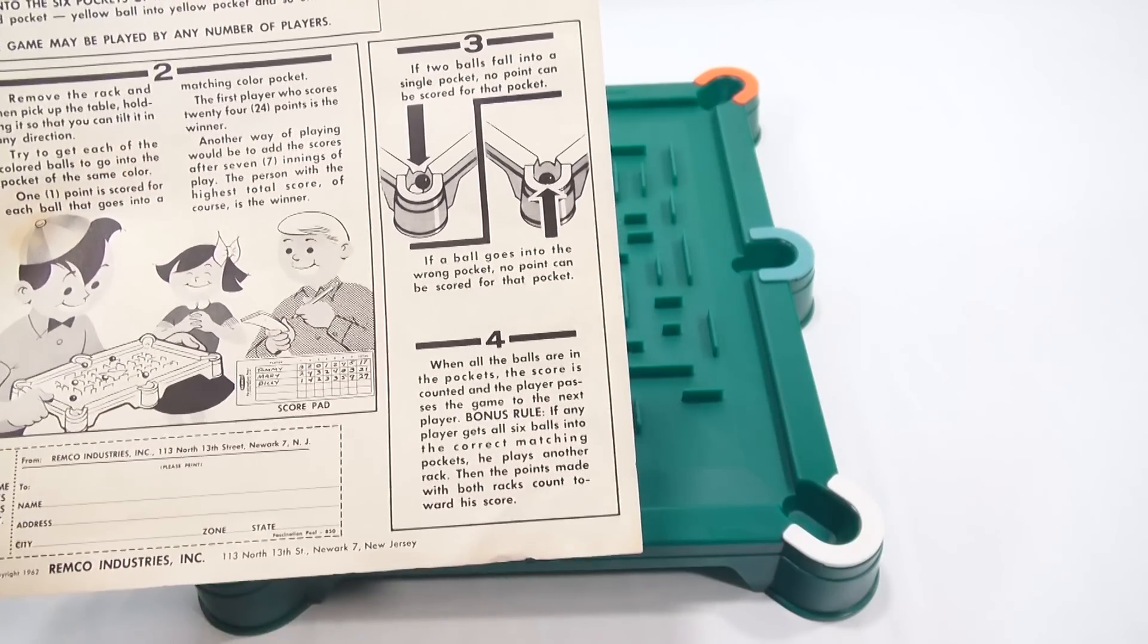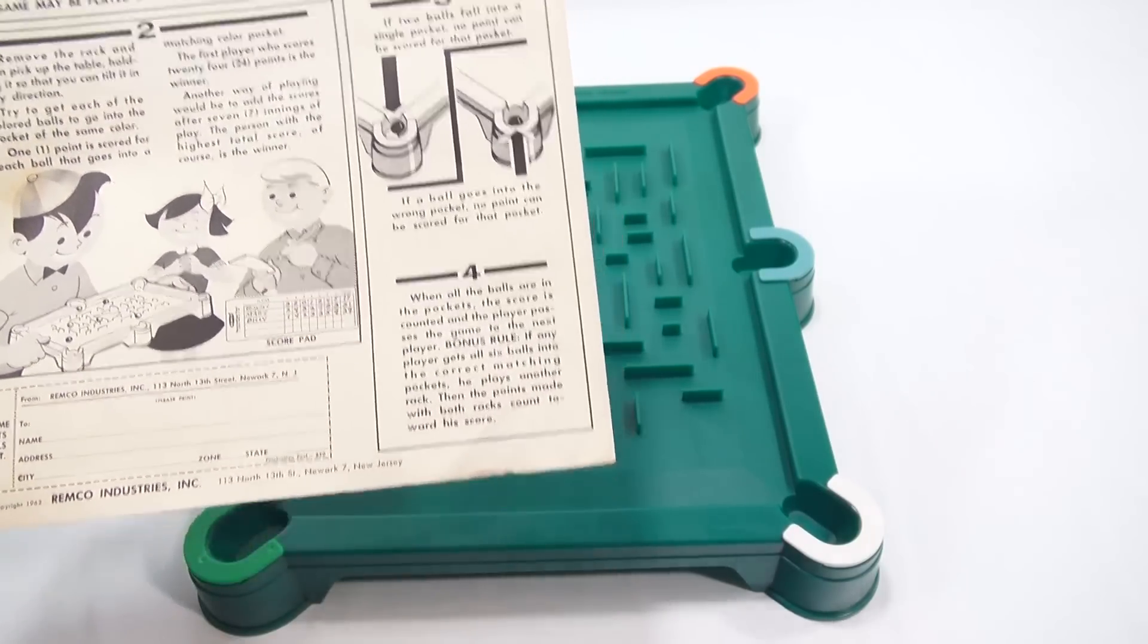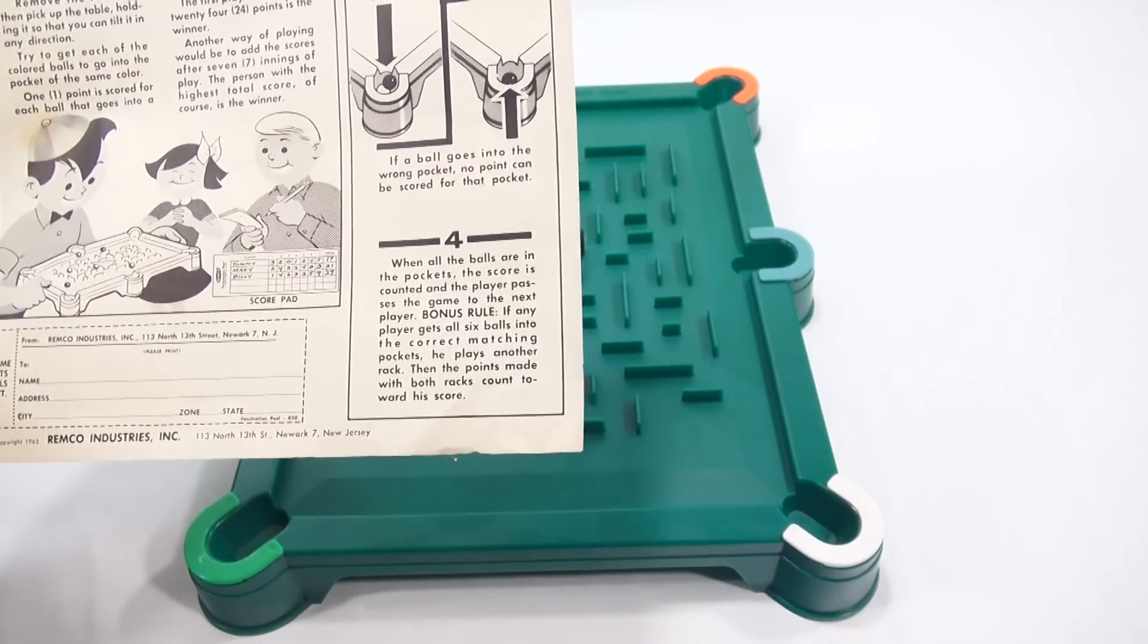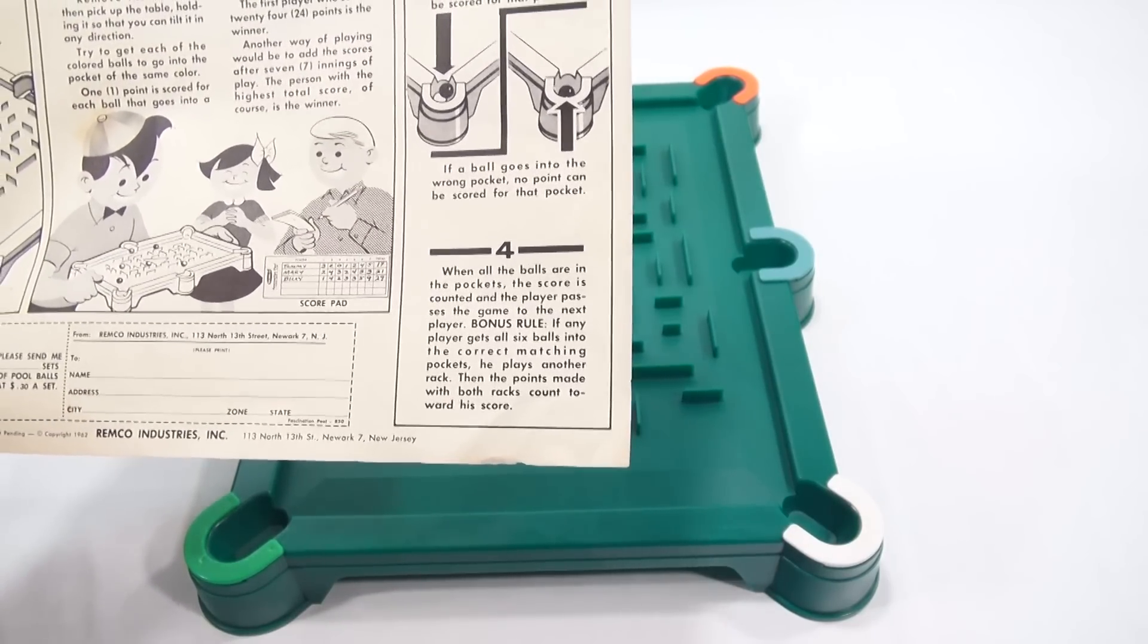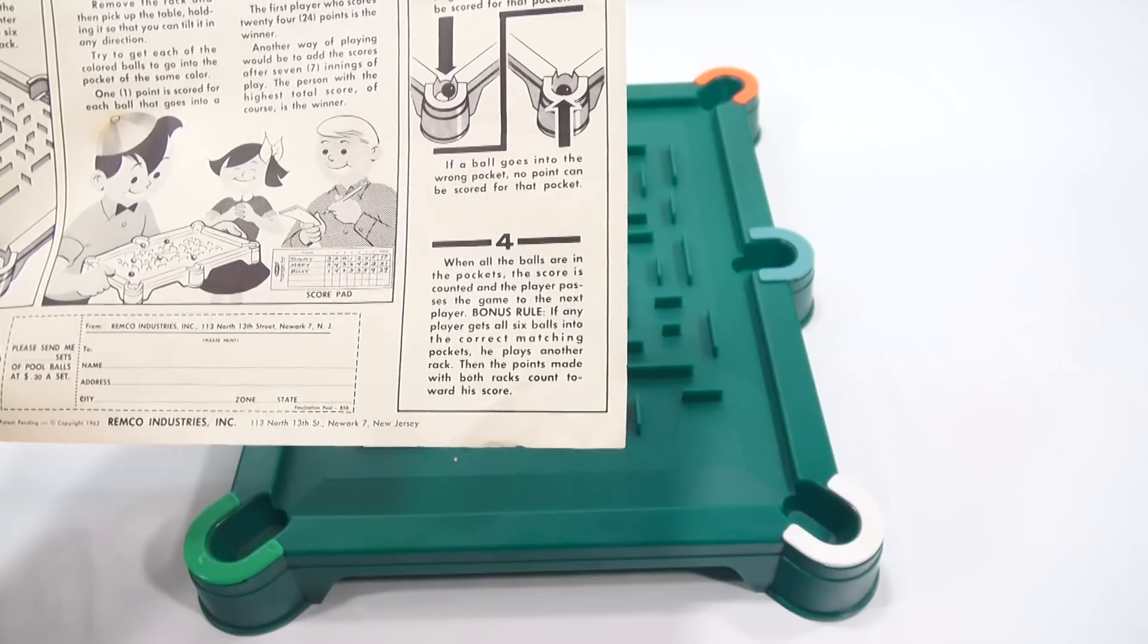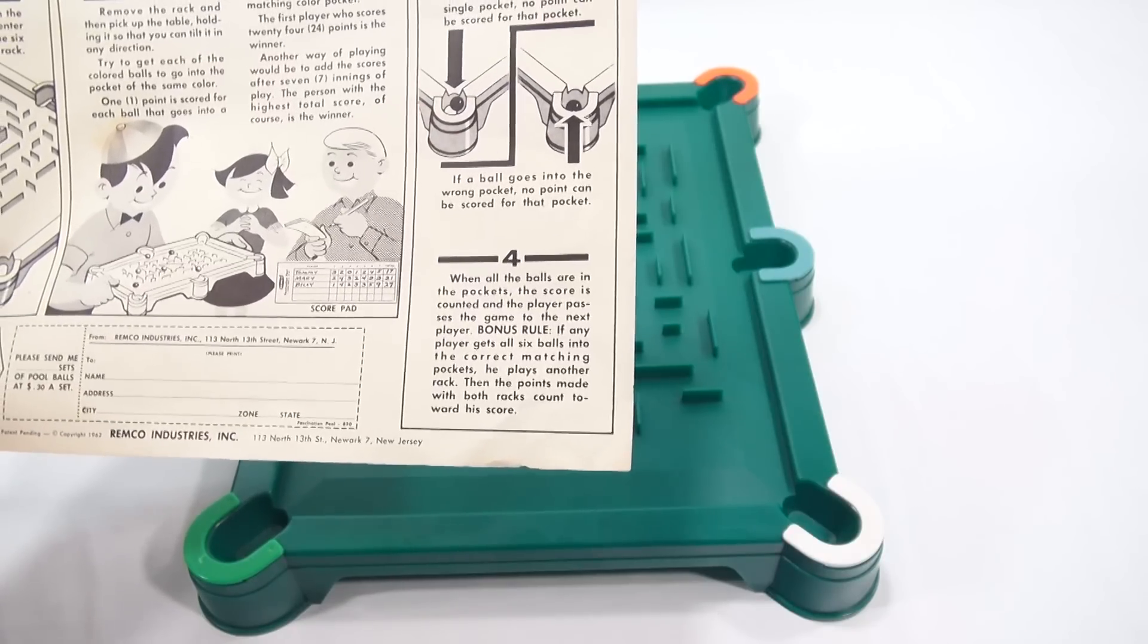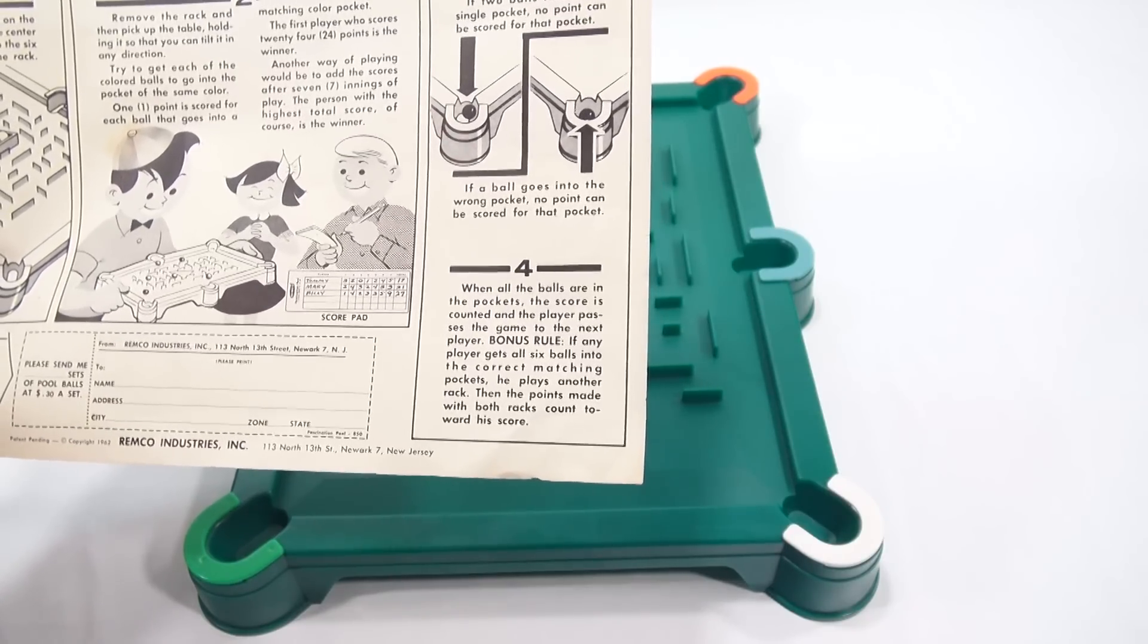If two balls fall into a single pocket, no point can be scored for that pocket. If a ball goes into the wrong pocket, no point. When all the balls are in the pockets, the scores counted and the player passes the game to the next player. Bonus rule: if any player gets all six balls into the correct matching pockets, he plays another rack then the points made with both racks count toward his score.